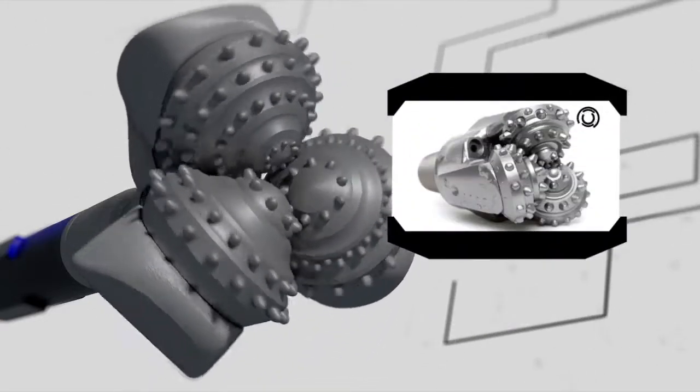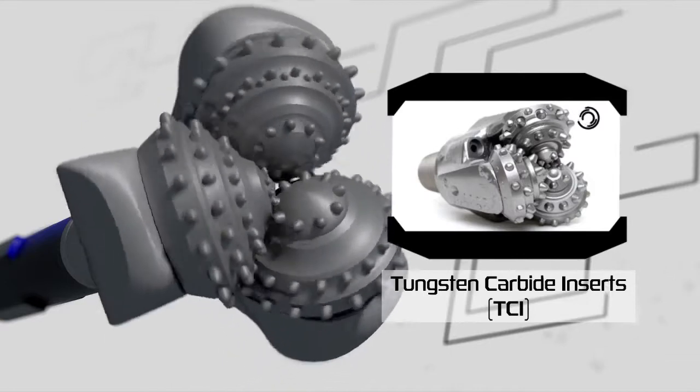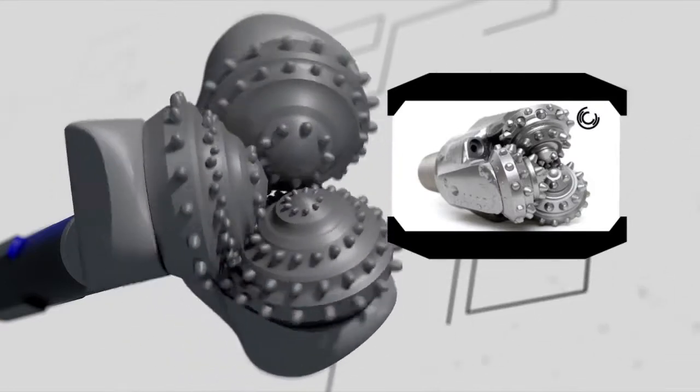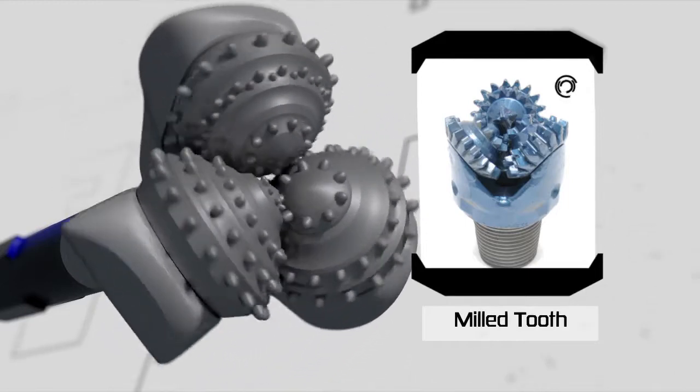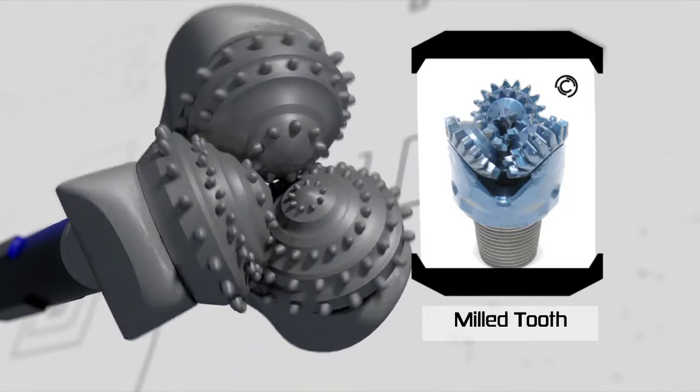Roller cone drill bits are often fashioned as either tungsten carbide inserts, also known as TCI, or milled tooth. Milled tooth bits are often used in softer rock formations, while TCI bits are used in harder rock formations.